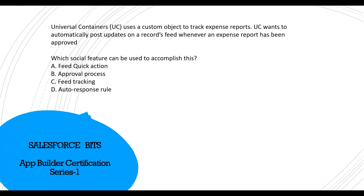Moving on — Universal Container uses a custom object to track expense reports and wants to automatically post updates on the record feed whenever an expense report has been approved. Which social feature can accomplish this? A quick feed action requires manual intervention. An approval process cannot post a record feed on its own. Feed tracking — yes, because if you enable feed tracking on a field on that object, it will automatically track changes. If someone is following that record, they will get updates in their feed. Auto-response rule — no. So feed tracking is the right answer.